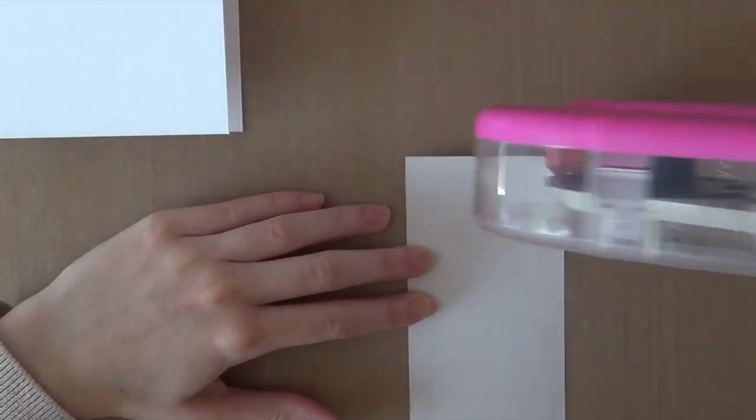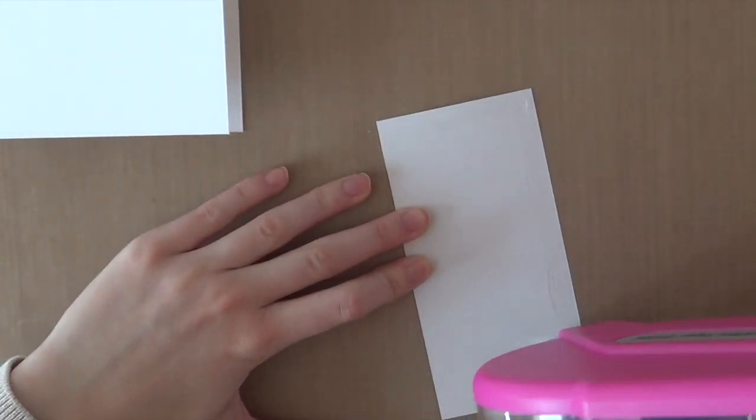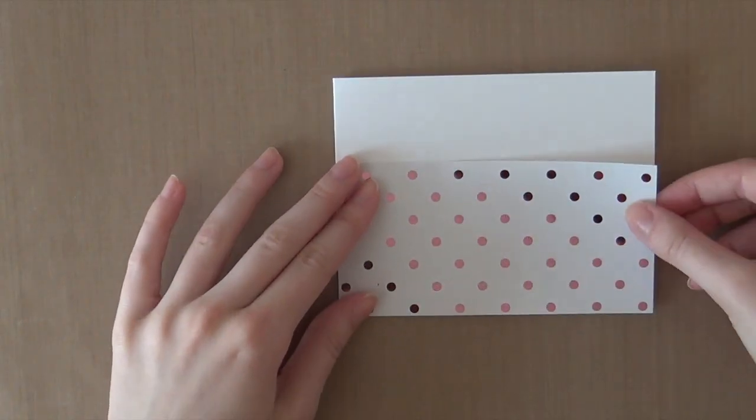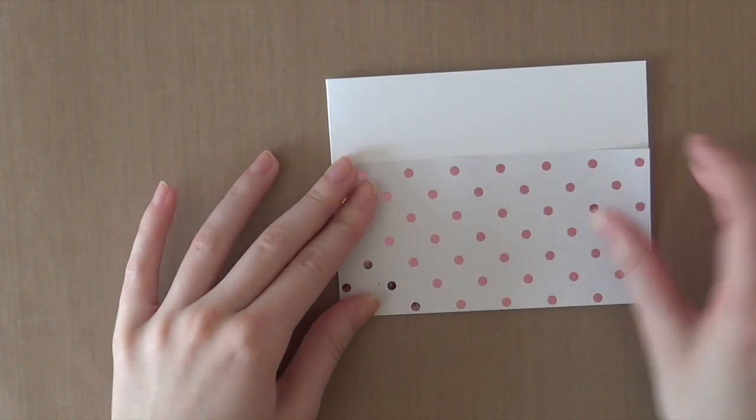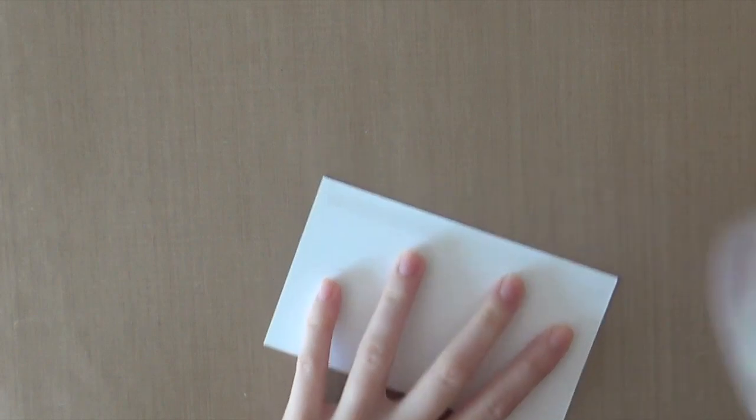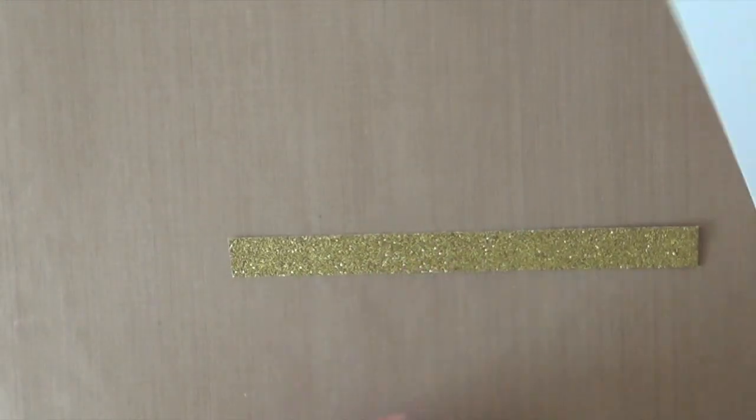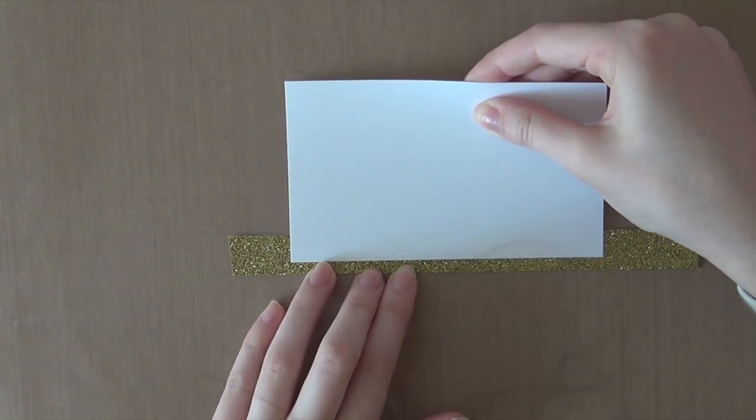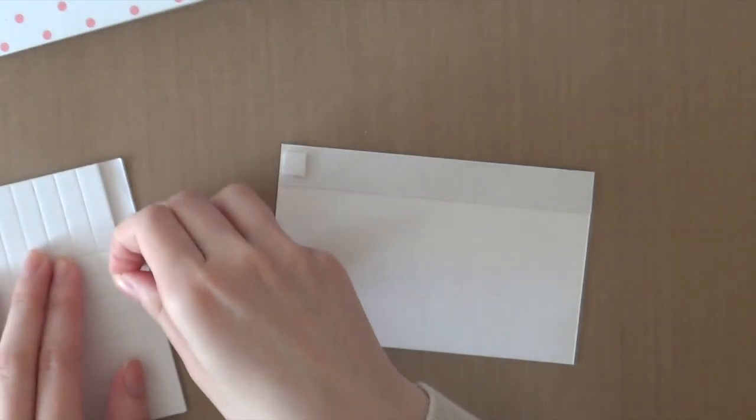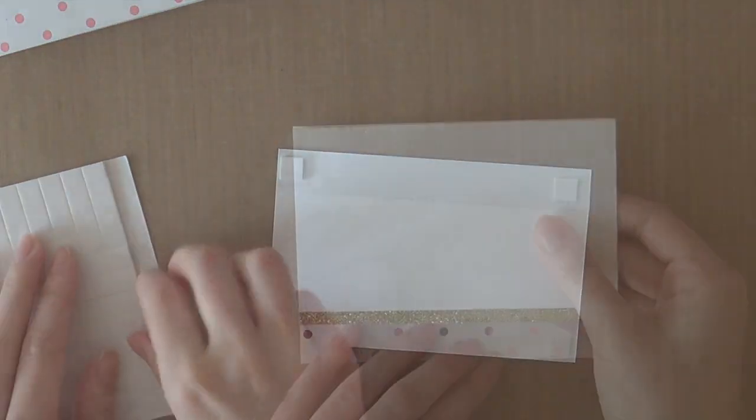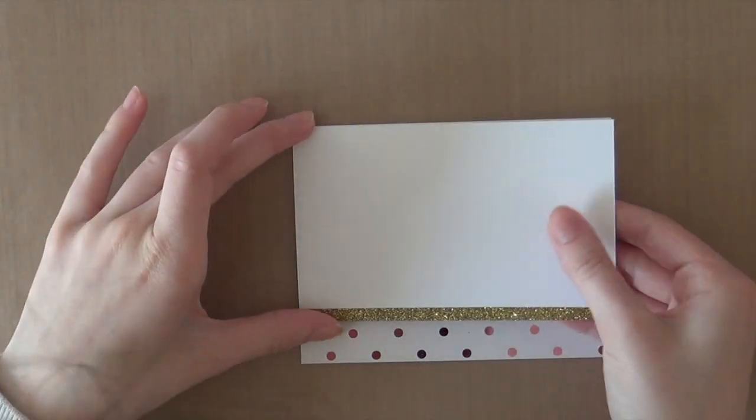I'm going to adhere this foiled piece to my card using my ATG by Scotch. I'm just using a regular standard size card that I cut out of Neenah white cardstock. Over here I have a piece of white cardstock and I just added a strip of adhesive so I can add this beautiful strip of gold glitter paper. I'm going to adhere it onto my card using some foam adhesive.